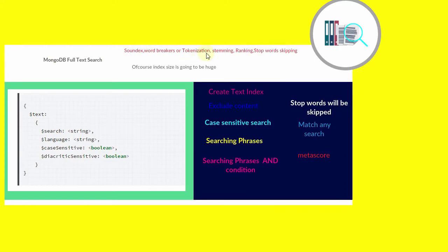Some of the features of a full text search engine are listed here. Among these, word breakers or tokenization and stemming are the most important ones. Tokenization is for splitting text or sentences into meaningful words. Stemming means that if you search for the word 'important', the search results will include 'importance' as well, and similarly if you search for 'queries', the result will include 'query' also. Ranking means every search result has a score, and stop word skipping is for skipping common words like 'and', 'the', etc.